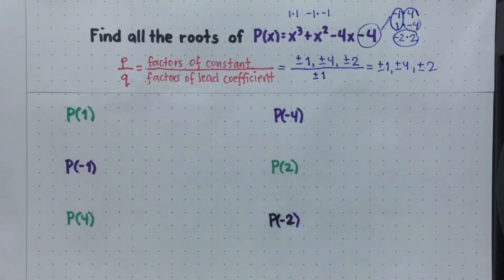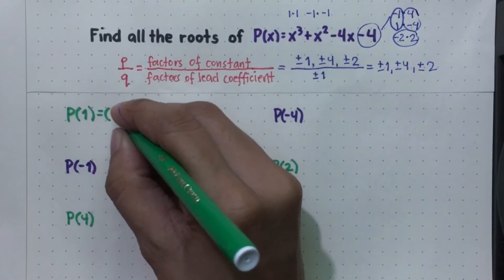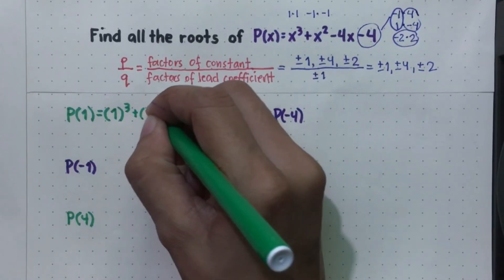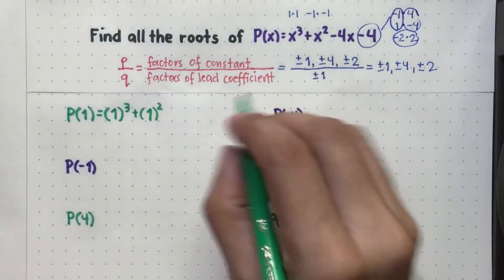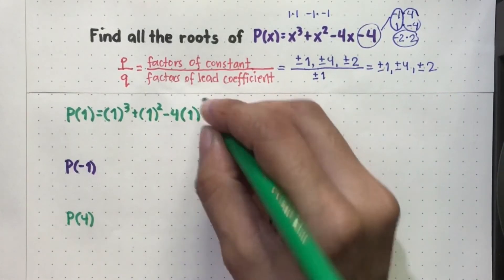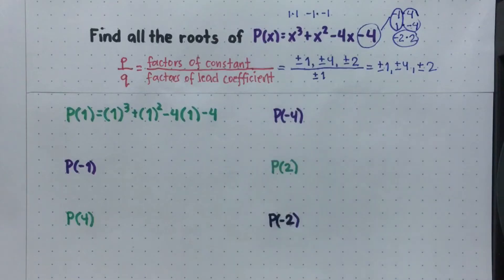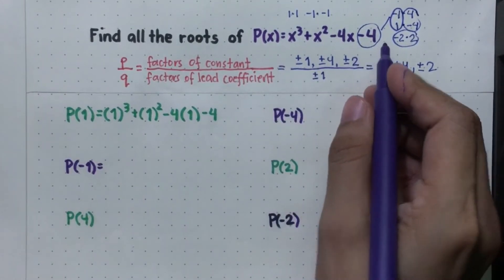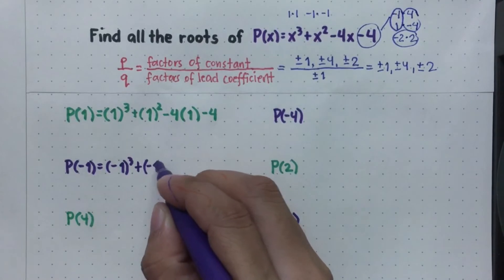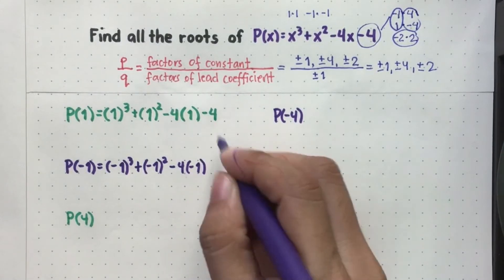Simulan natin sa P of positive 1, P of negative 1, P of positive 4, P of negative 4, P of positive 2, and P of negative 2. Ang gagawin lang natin, lahat ng mga variable na x papalitan natin ng each value. For P(1): 1 cubed plus 1 squared minus 4 times 1 minus 4. For P(-1): negative 1 cubed plus negative 1 squared minus 4 times negative 1 minus 4. For P(4): 4 cubed plus 4 squared minus 4 times 4 minus 4. For P(-4): negative 4 cubed plus negative 4 squared minus 4 times negative 4 minus 4.